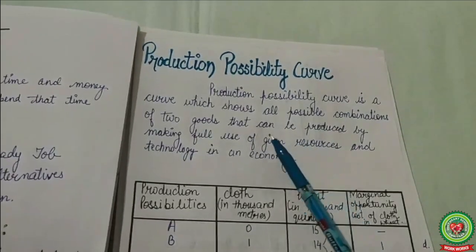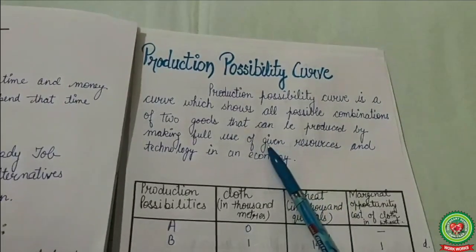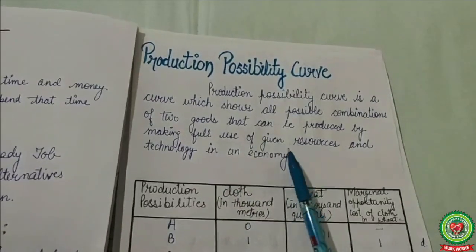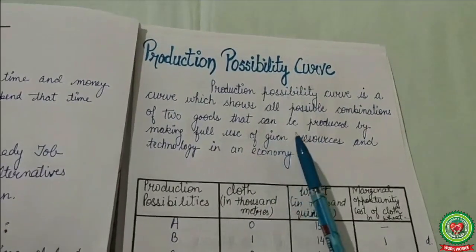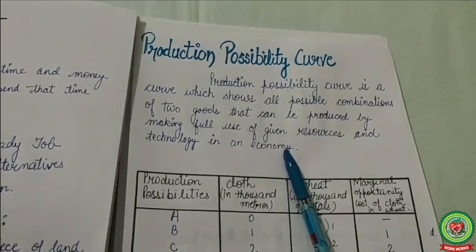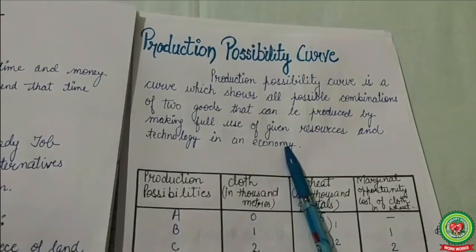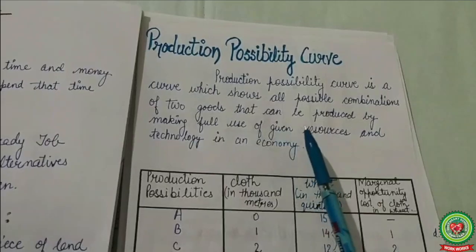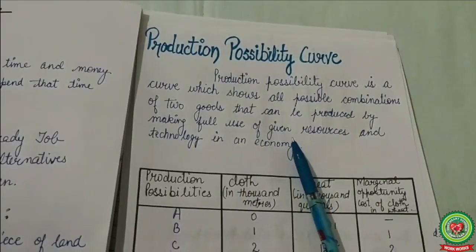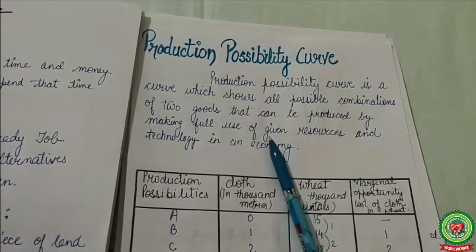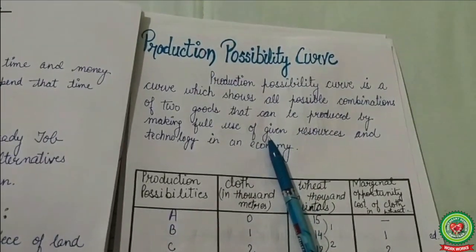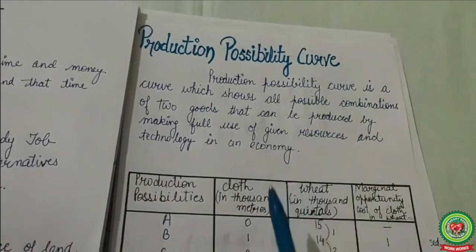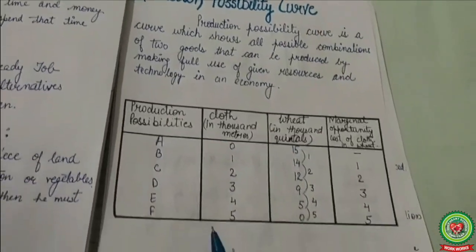It should be remembered that an increase in the production of one commodity would reduce the production of another commodity. The available resources can be used alternatively to produce different combinations of goods and services, which are known as production possibilities. The curve that shows these alternative combinations is known as the Production Possibility Curve.